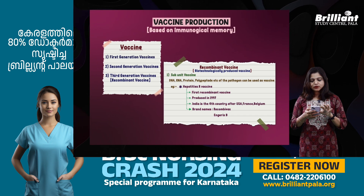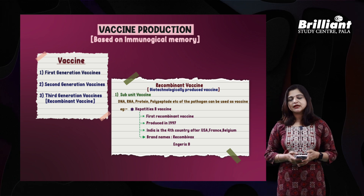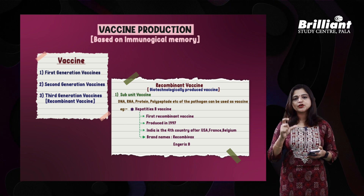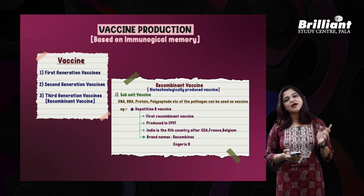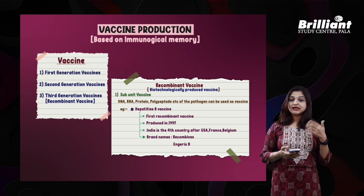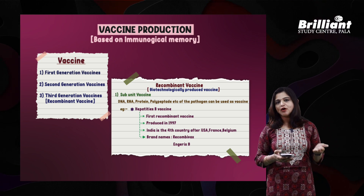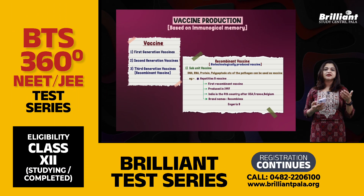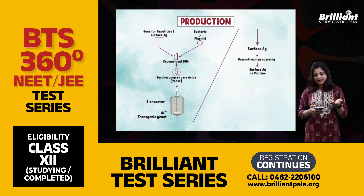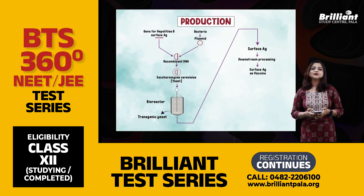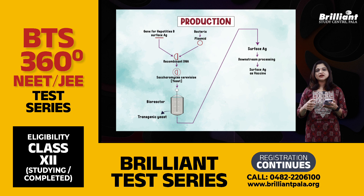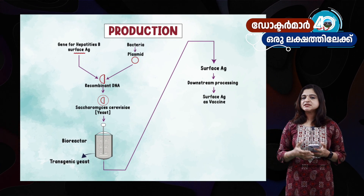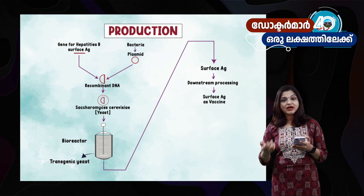The next one is Vaccine Production. The NMC version is added. What is the vaccine production? What type of vaccine production has detail? We also have a recombinant vaccine. The next slide is what we have to do with the Hepatitis B vaccine to get a recombinant vaccine.